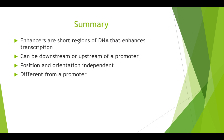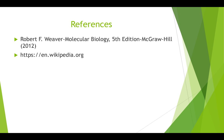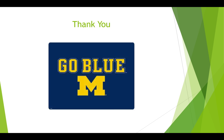Just a couple of takeaways before wrapping up: enhancers are short regions of DNA that increase transcription, and they differ from promoters in that they are orientation- and position-independent. Thank you so much for sticking around the entire video. I hope I did a good job explaining the experiments that led to the identification of the enhancer in the gamma2b gene and its features. Thanks a lot, and always go blue!